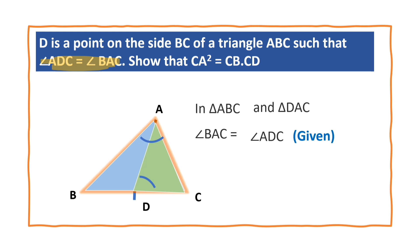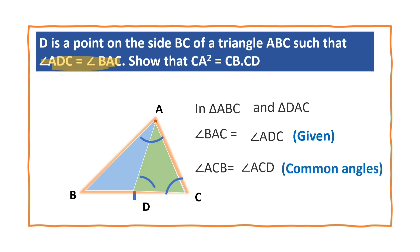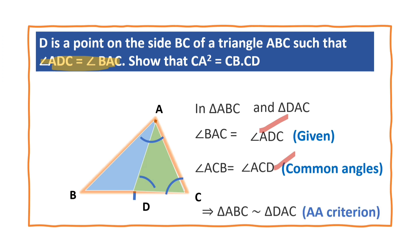Also, angle C is common to both triangles. So angle ACB in triangle ABC is equal to angle ACD. According to the angle-angle criterion, triangle ABC is similar to triangle DAC.